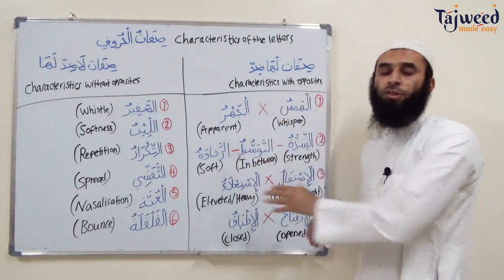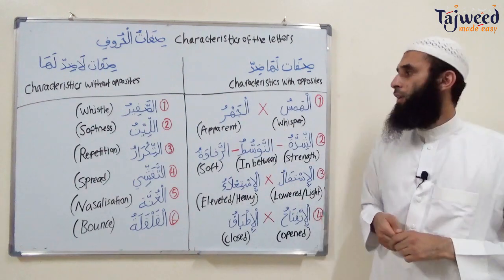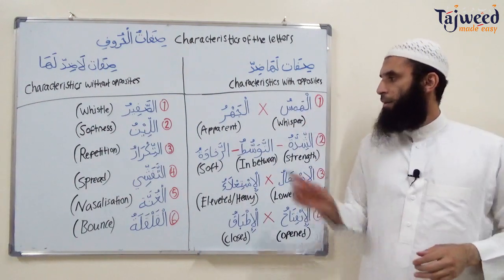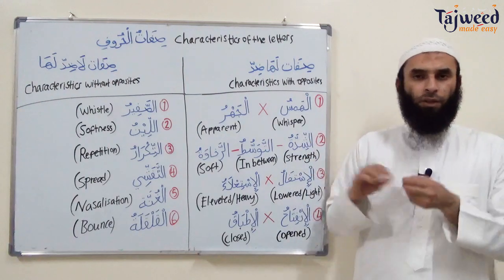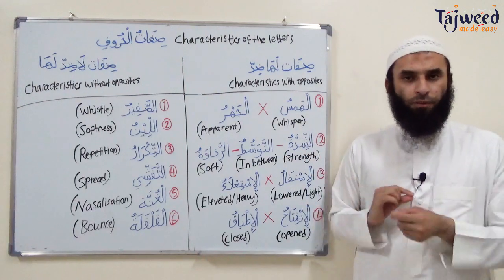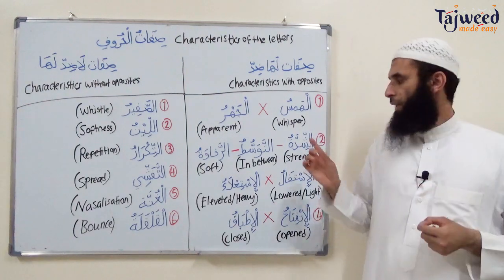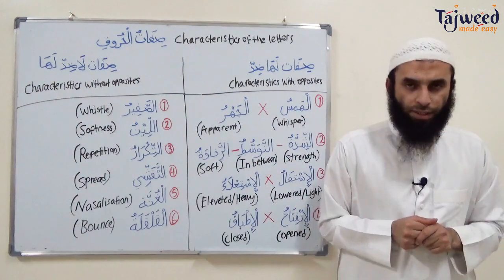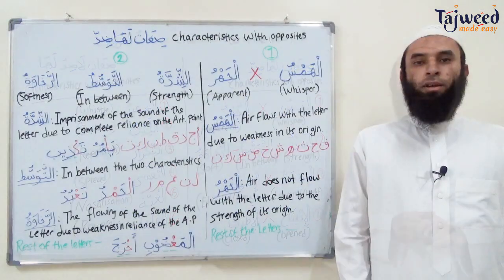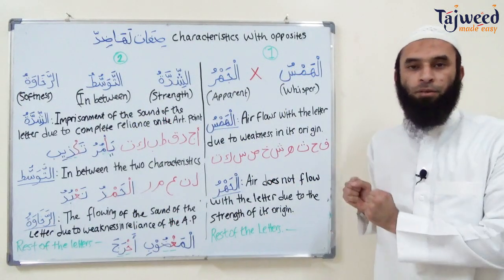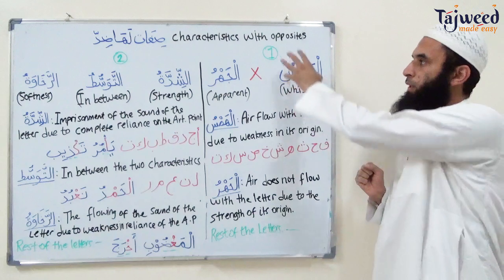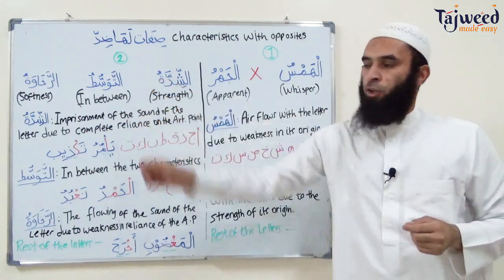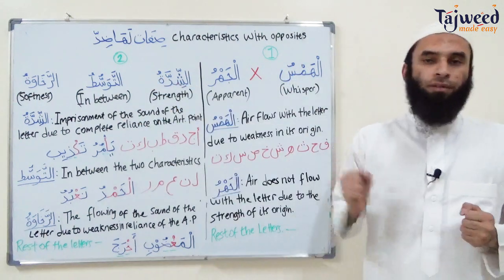This is an overview of Sifat al-Huroof. Inshallah now, we're going to look at the first two parts: al-Hams and al-Jahra, to do with the flowing of breath, and al-Shidda, Tawasut, and al-Rakhawa, to do with the flowing of sound. So on the board we have two types of characteristics — number one, to do with the flowing of air, and number two, to do with the flowing of sound.